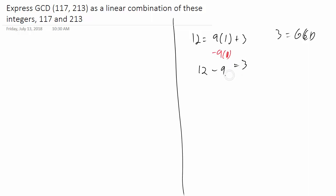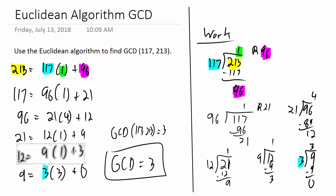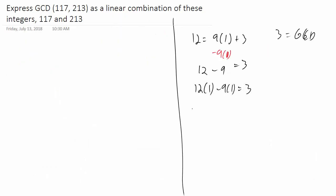What I get is 3 is equal to 12 minus 9. Whenever you're doing linear combinations though, you always want to do 12 times something, 9 times something, even though the 1 is understood. So the idea is 12 times 1 minus 9 times 1 is equal to 3.